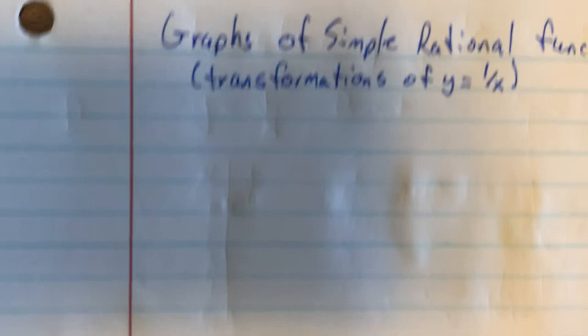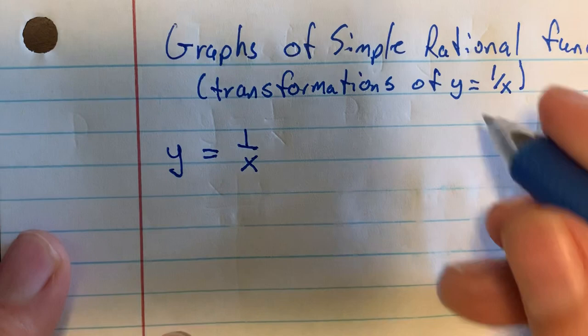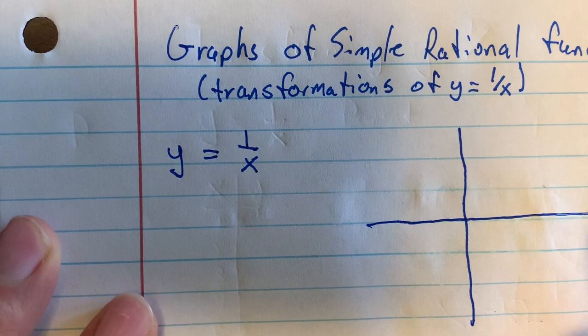We're going to be looking at graphs of simple rational functions, which are transformations of the parent function y equals 1 over x. Go ahead and pause this video and make sure you are able to graph y equals 1 over x. You should have done it in a previous homework and know the essential features. You're welcome to graph it, and if you need a place to start, you can make a table by choosing different x values.